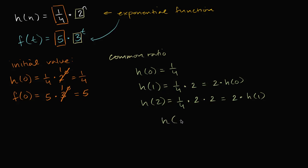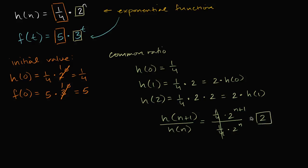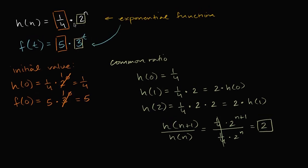So h of n plus one over h of n is going to be equal to, actually I can work it out mathematically, 1/4 times 2 to the n plus one over 1/4 times 2 to the n. That cancels. 2 to the n plus one divided by 2 to the n is just going to be equal to two. That is your common ratio. So for the function h, for the function f, our common ratio is three.